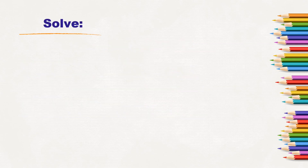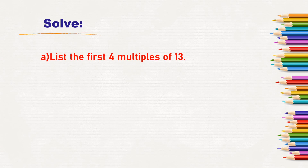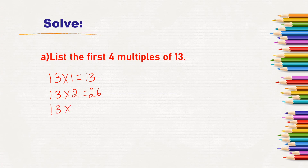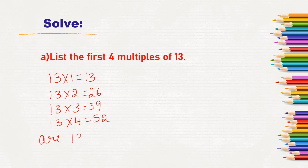Solve: list the first 4 multiples of 13. 13 times 1 is 13, 13 times 2 is 26, 13 times 3 is 39, and 13 times 4 is 52. So the first 4 multiples of 13 are 13, 26, 39, and 52.